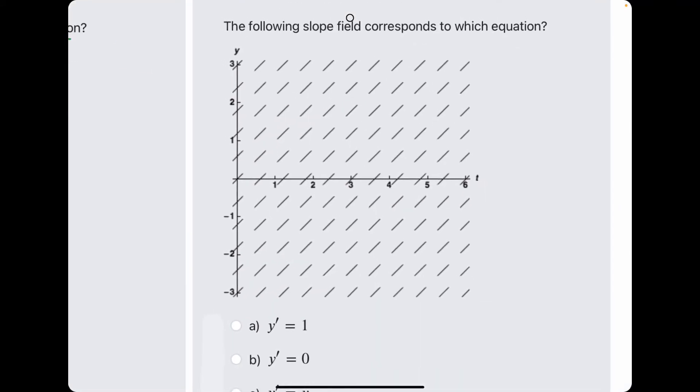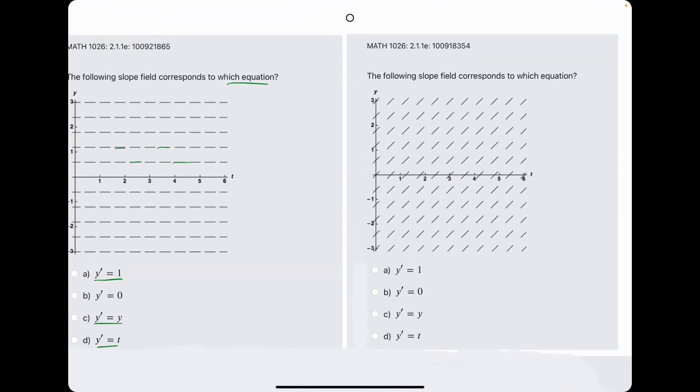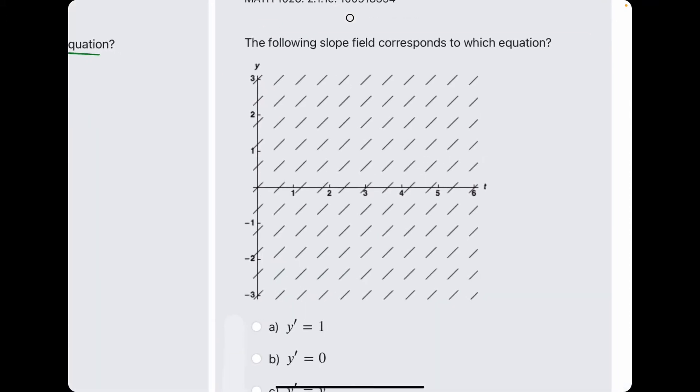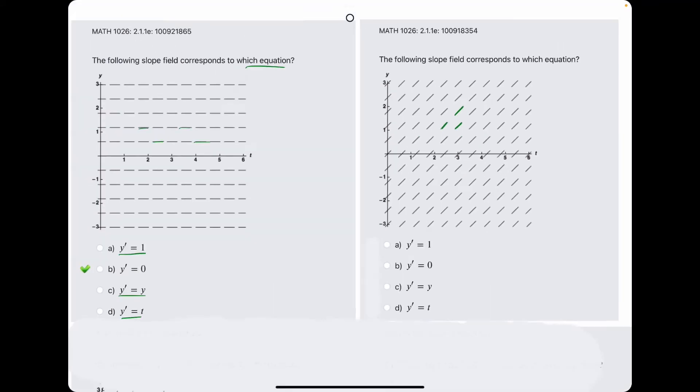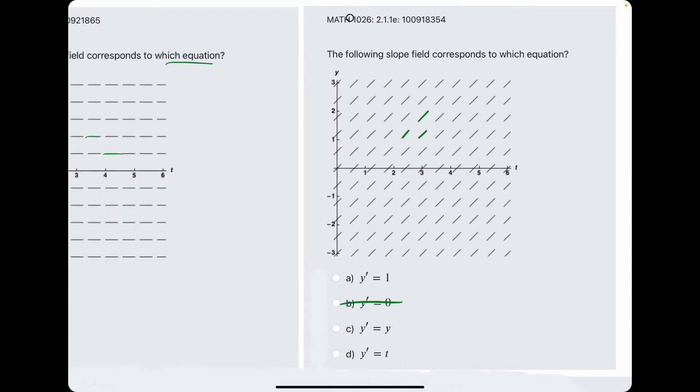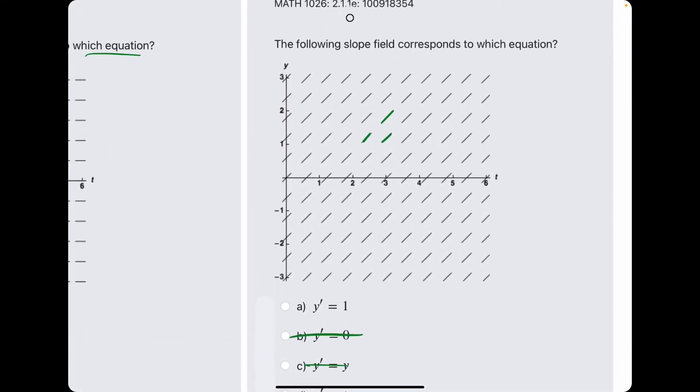So looking at this slope field, all of these little tick marks have the same slope, no matter what the t and y value are. And we can tell that that slope is positive because these little tick marks are increasing from left to right. So if we eliminate 0, we know the slope's not flat,